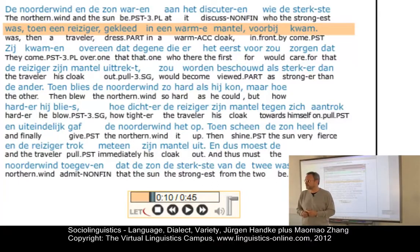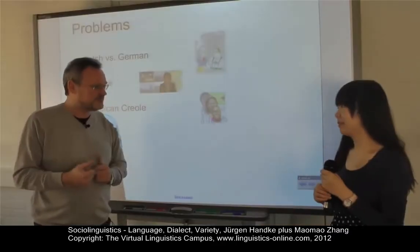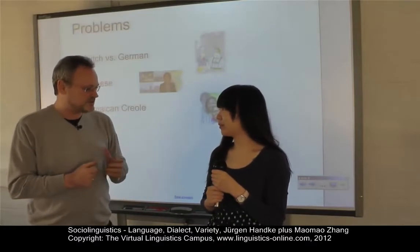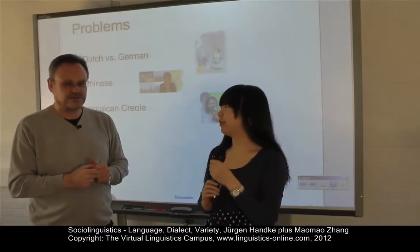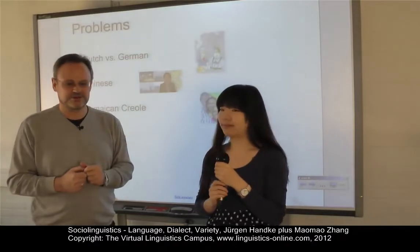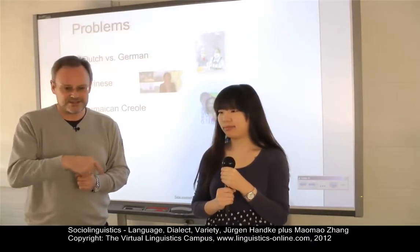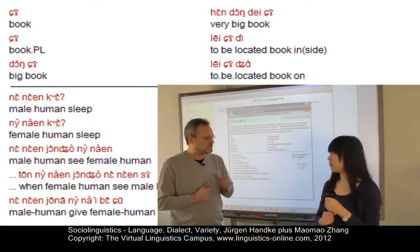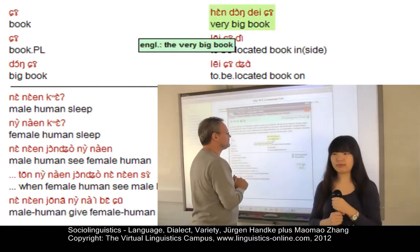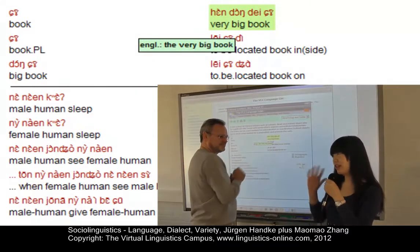Let's look at Chinese now. I have a native speaker of Chinese here, Mao Mao. Mao Mao, can you say to us in standard Mandarin Chinese, 'the very big book'? Now we will load some varieties of Chinese and ask Mao Mao whether she understands them or not. Here's the first variety of Chinese — let's find out whether you understand what the speaker says. Mao Mao responds: 'I can understand. I can distinguish, but it's not totally different — I can understand.'